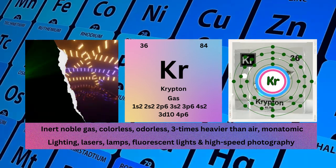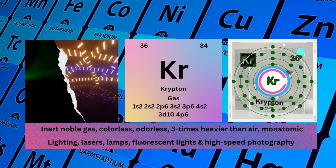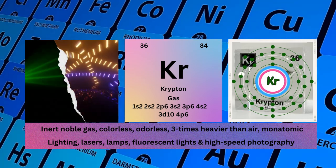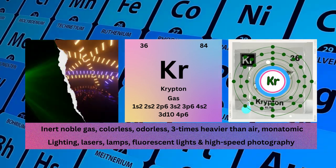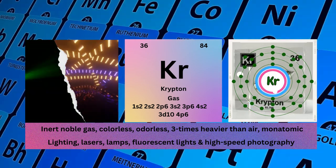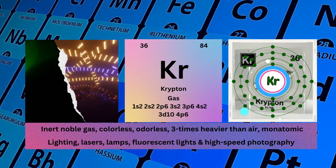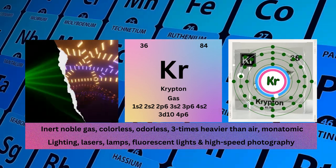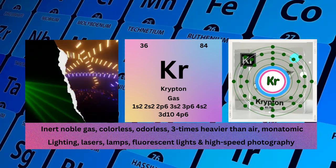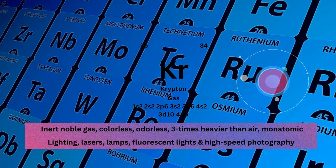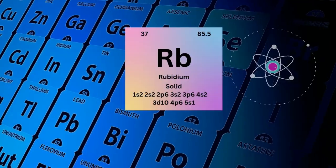Physical properties: inert noble gas, colorless, odorless, three times heavier than air, monatomic. Krypton used for lighting, lasers, labs, fluorescent lights and high-speed photography.